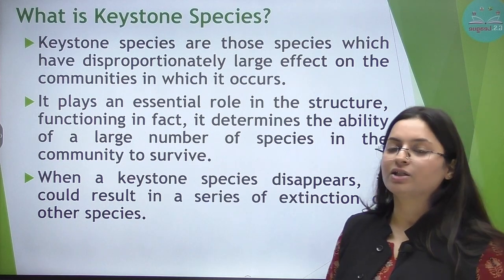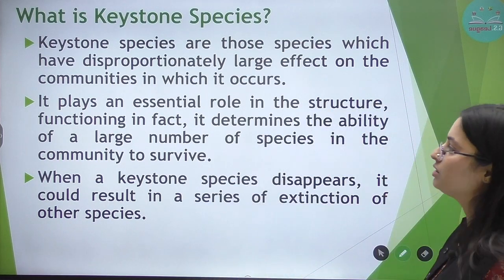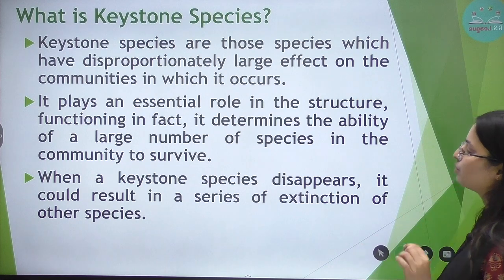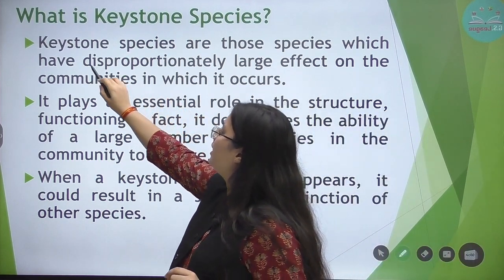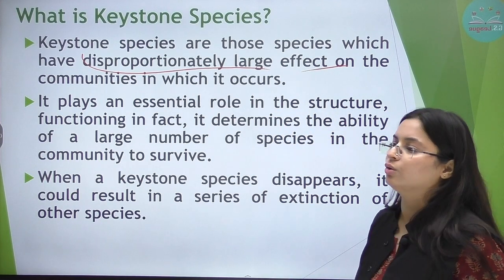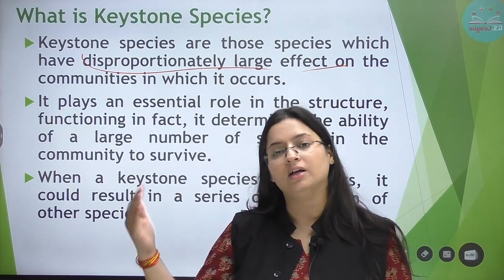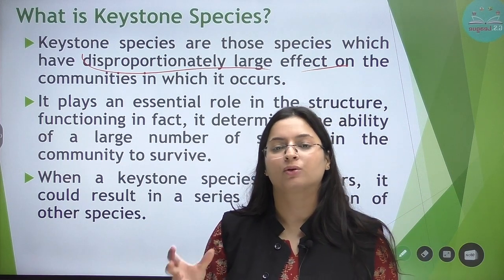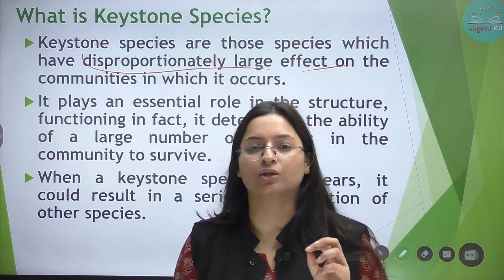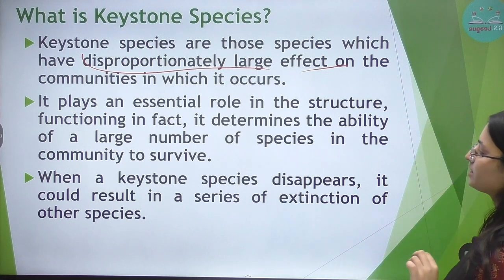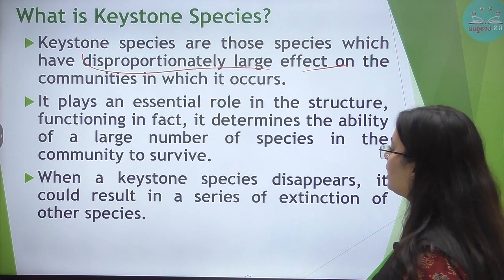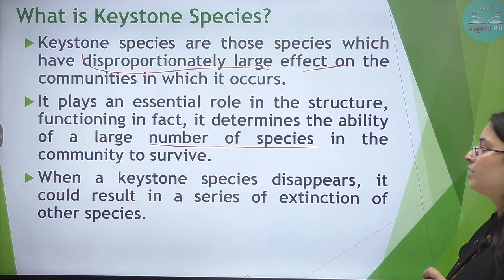Next, we are going to talk about keystone species. Keystone species are those which have a disproportionately large effect on the community in which they occur. As the term itself suggests, keystone means it is a key species of its community. It plays an essential role in the structure and functioning of the community and determines the ability of a large number of species to survive.